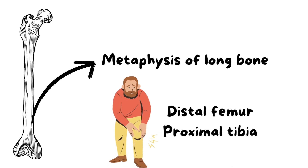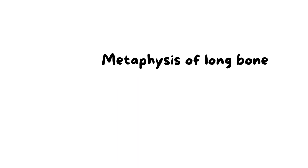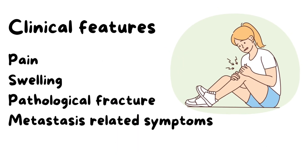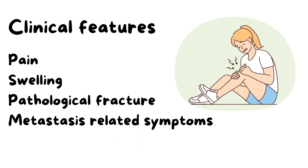It usually occurs in the metaphysis region above the growth plate. The commonest sites are around the knee — the distal femur and proximal tibia. Symptoms are pain and swelling, which are usually rapidly progressive.